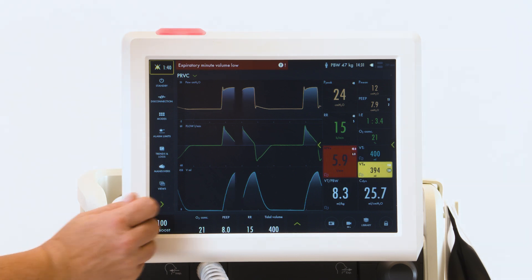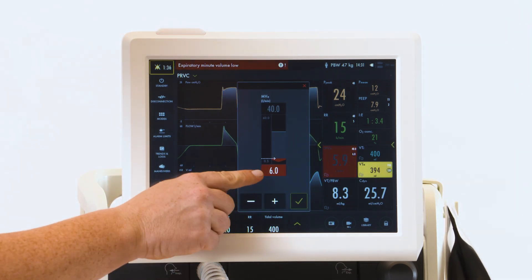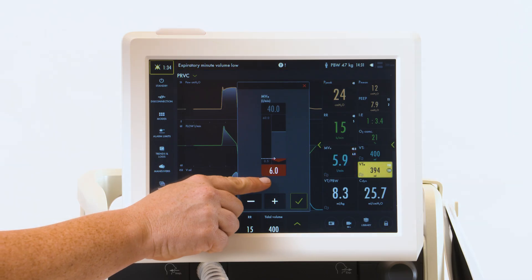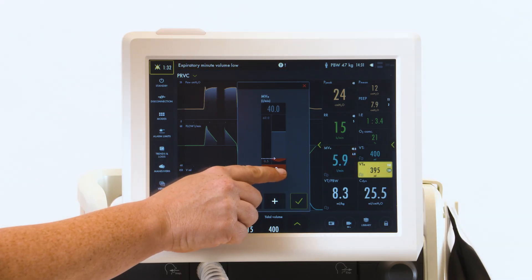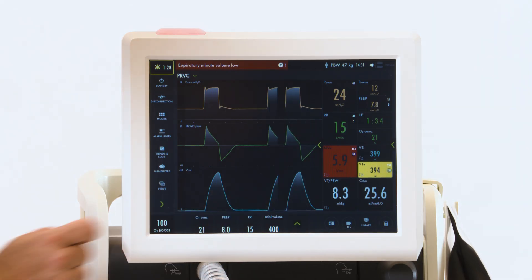In order to make an adjustment, touch whatever is alarming. You can see it's the low alarm limit. You can pull that down or you can add and subtract and check mark to confirm.